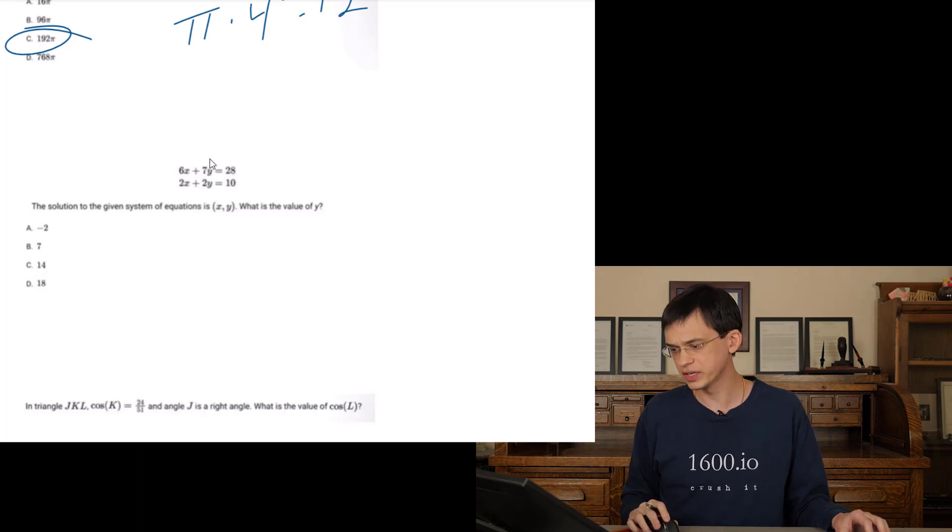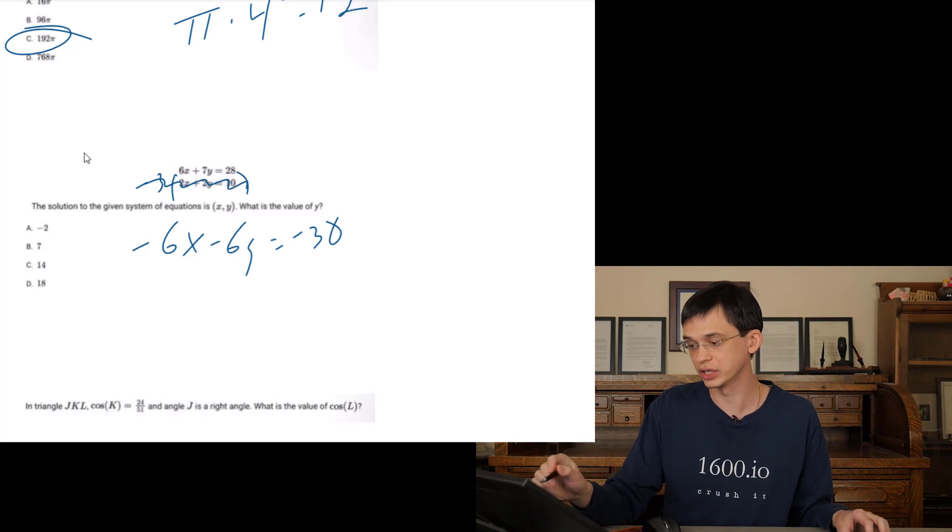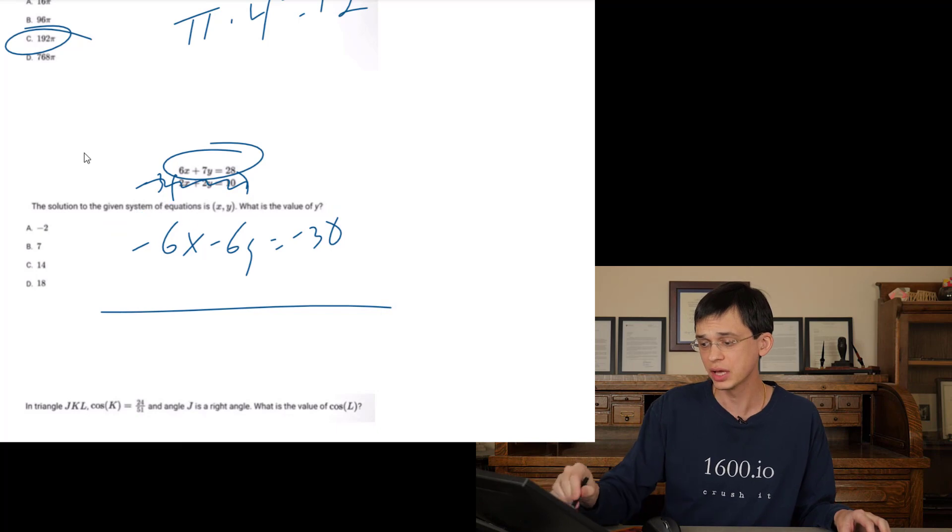So we have a system here. What is the value of Y? So we have to cancel out X. So what I'm going to do, I'm going to solve for Y. I'm going to multiply the second equation by negative 3. That means that we're going to get negative 6X minus 6Y equals negative 30. So I just rewrote the second equation. If we add the two, the first equation and the second modified equation together to create a linear combination, the X's cancel. 7Y minus 6Y is Y equals negative 2. Y equals negative 2.